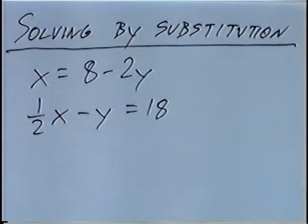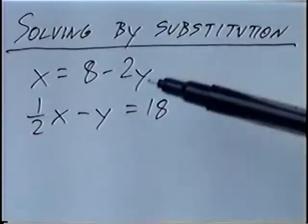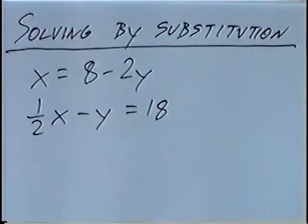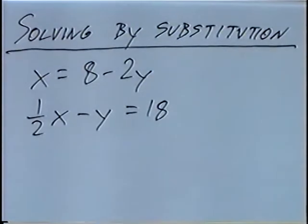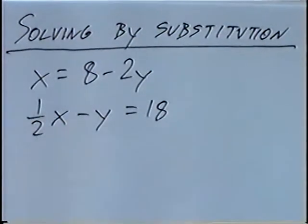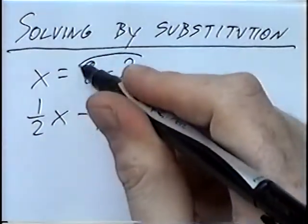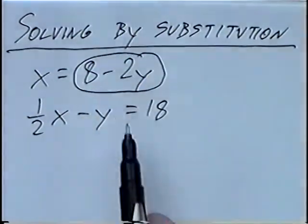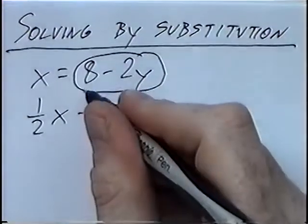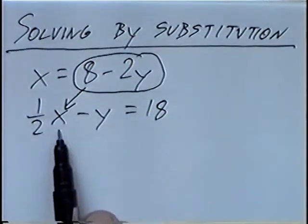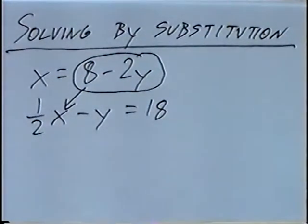To solve these equations by substitution, we'll take one equation and substitute it inside the other equation. For example, if we have x equals 8 minus 2y, then 8 minus 2y is equal to x, which means we can substitute that into the second equation in place of x.